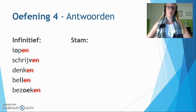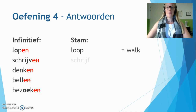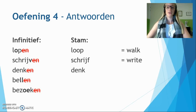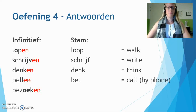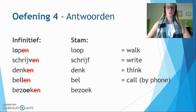Lopen: the important thing is we have to double the o because we have one p — so it becomes loop. Schrijven: the important thing is the v — we cannot have a v at the end of a word, so we make it an f — schrijf, meaning 'write'. Denken: it's a simple one, it has two consonants at the end, so you don't double anything — just remove -en — denk, meaning 'think'. Bellen: it has the double l — you cannot have twice the same consonant at the end — bel, meaning 'to call by phone'. Bezoeken: you have the diphthong oe — a combination of two different vowels — so even though you have only one consonant k at the end of your stam, you cannot double a diphthong. So it becomes bezoek, meaning 'to visit'.